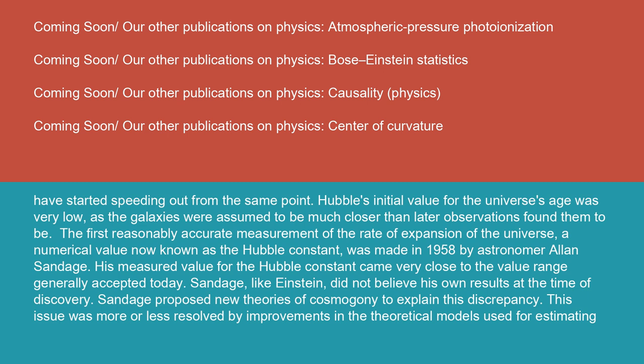The first reasonably accurate measurement of the rate of expansion of the universe, a numerical value now known as the Hubble constant, was made in 1958 by astronomer Alan Sandage. His measured value for the Hubble constant came very close to the value range generally accepted today. Sandage, like Einstein, did not believe his own results at the time of discovery. Sandage proposed new theories of cosmogony to explain this discrepancy.